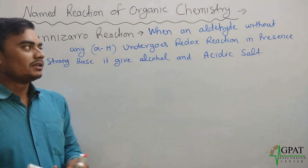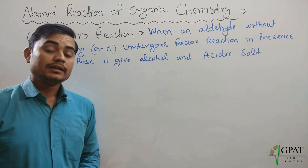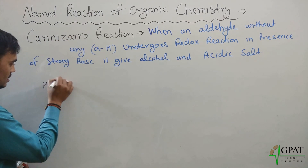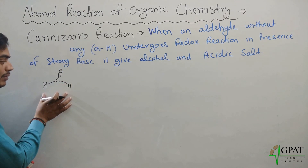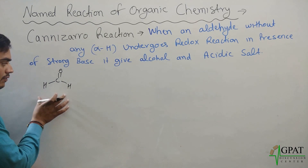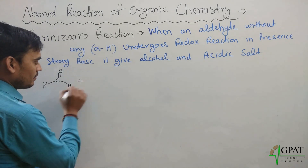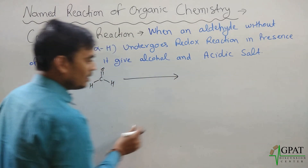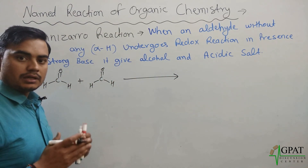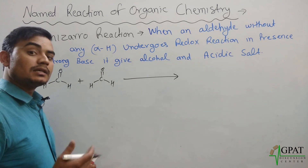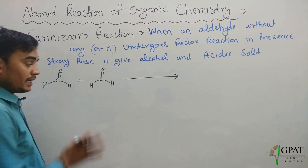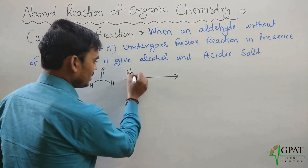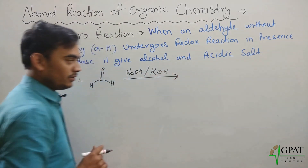Simply put, in the Cannizzaro reaction, an aldehyde which does not have an alpha hydrogen — for example, formaldehyde — undergoes a redox reaction. Two molecules of this aldehyde react in the presence of a strong base, such as sodium hydroxide or potassium hydroxide.